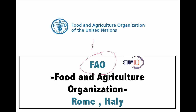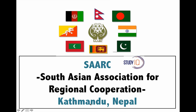Next is the Food and Agriculture Organization — FAO. As mentioned, anything related to food and agriculture will be headquartered in Italy, so its headquarter is in Rome, the capital of Italy.